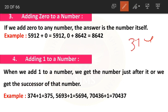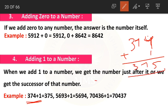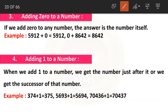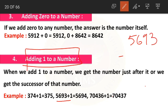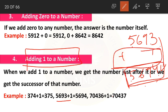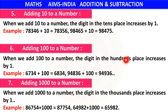For example, 374 plus 1: 4+1=5, 7, 3 — giving 375. And 375 is indeed the number that comes just after 374, which is its successor. Another example: 5,693 plus 1 gives 5,694, which is the successor of 5,693. We got it by adding 1 to the given number.